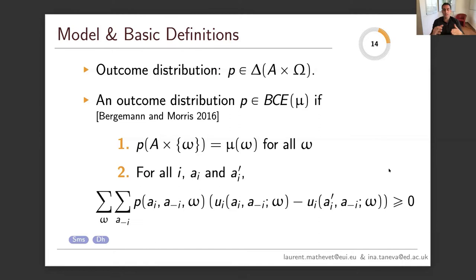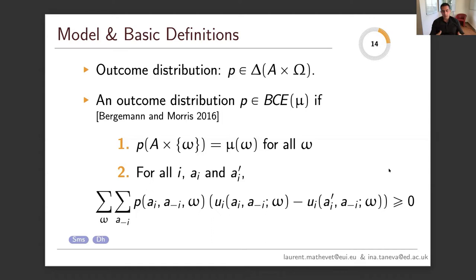There is a special class of outcome distributions called Bayes correlated equilibrium, introduced by Bergmann and Morris in 2014–15. They are defined by two conditions. First, the marginal of p over states equals the prior — that is a physical constraint. Second, there is an incentive constraint: each player i is happy to play the recommended action a_i rather than deviate to a_i prime, if other players also obediently follow their recommendations. These expectations are taken over not only states, but also actions of the other players.